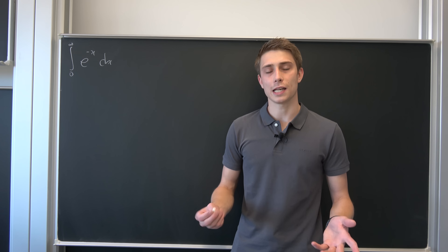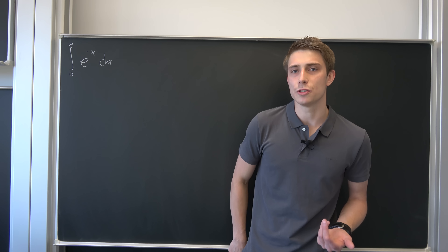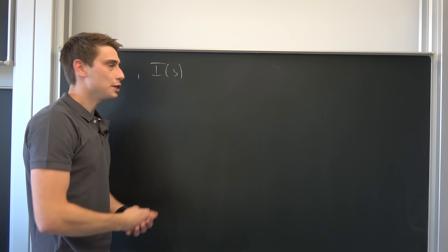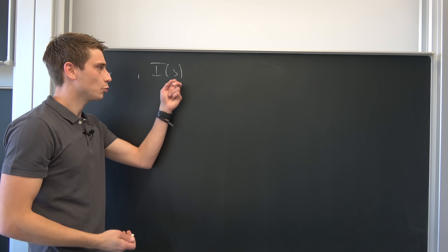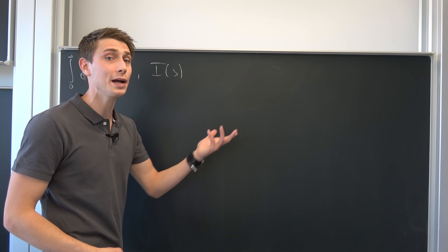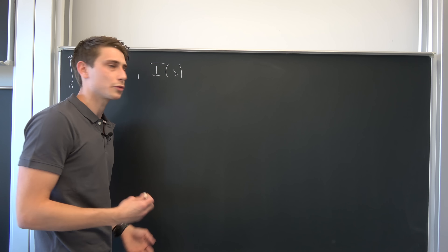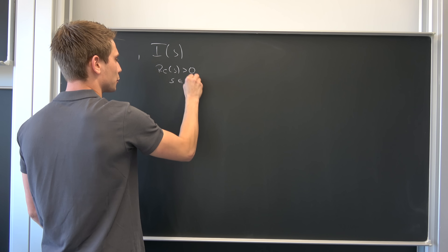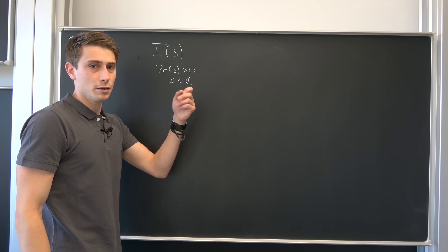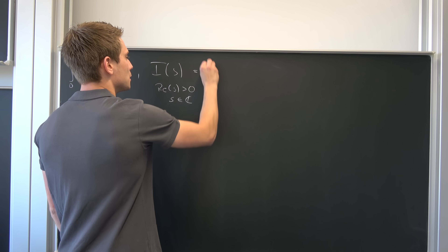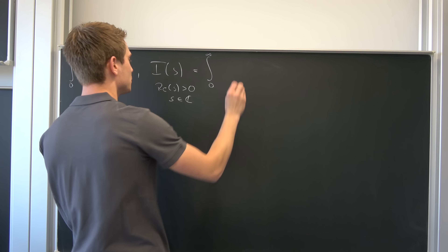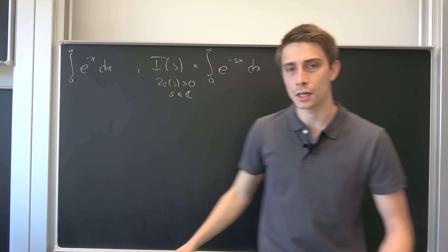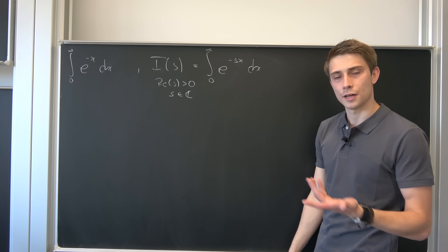Now we want to use the Leibniz rule for integration on this one, so why not introduce a new parameter? We are going to define a new integral I with respect to s, where s is a complex number with the real part of s greater than 0. We need this condition for the integral to even converge. So the integral is the improper one from 0 to infinity of e to the minus s times x dx.